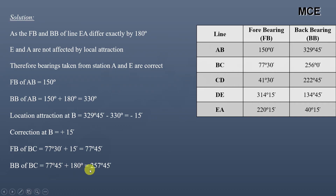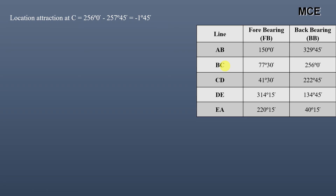The observed back bearing of line BC is 256°00'. This means there is local attraction present at station C, and its value equals observed minus correct: 256°00' minus 257°45' equals minus 1°45'. The correction at station C will be plus 1°45'. If the error is negative, the correction will be positive; if the error is positive, the correction will be negative — the correction is always the opposite sign of the error.